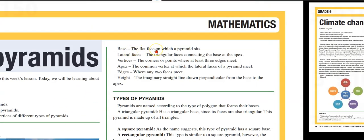Base: the flat face on which the pyramid sits. Lateral faces: the triangular faces connecting the base at the apex. Vertices: the corners or points where at least three edges meet. Apex: the common vertex at which the lateral faces of a pyramid meet.